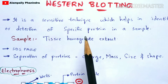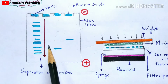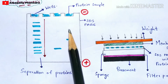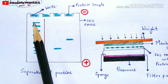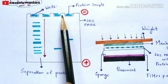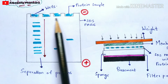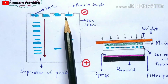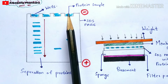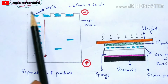Now let us see how the Western blotting technique is performed. First, you take an SDS-PAGE and prepare wells on it — here I have prepared four wells. In these wells you are going to add the sample, which is the tissue homogenous extract consisting of proteins.